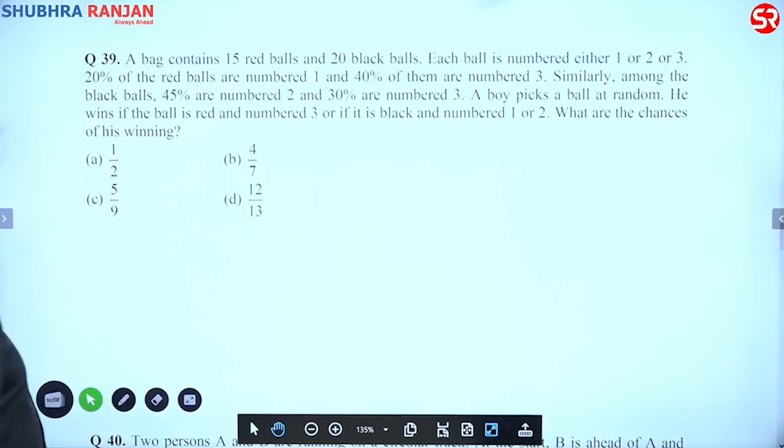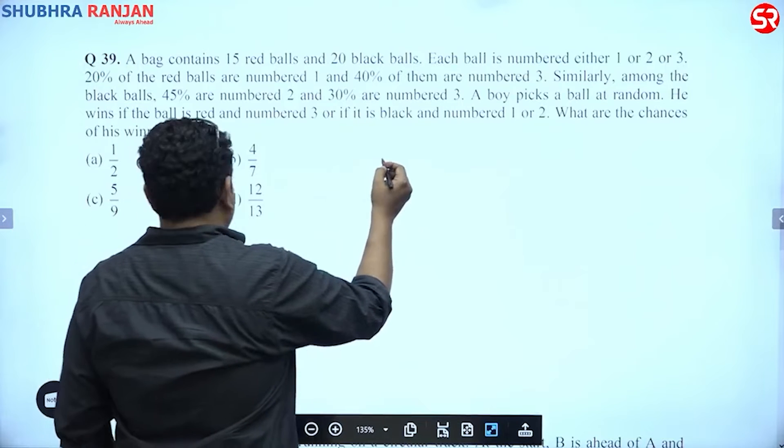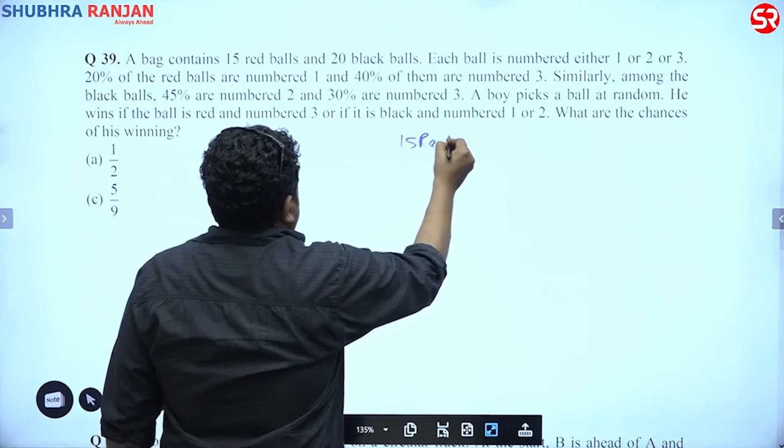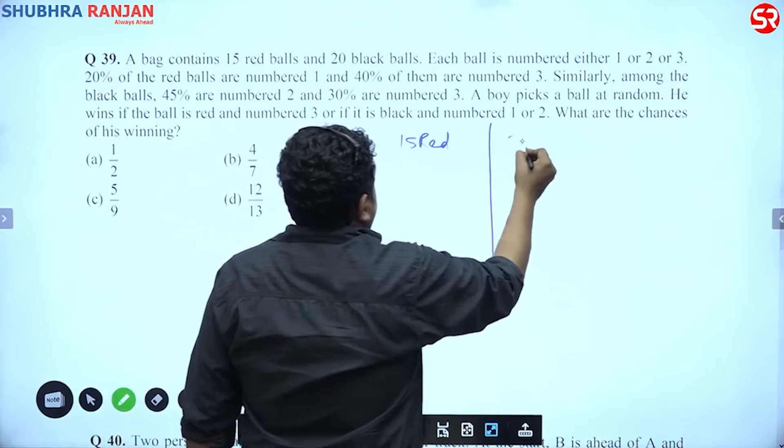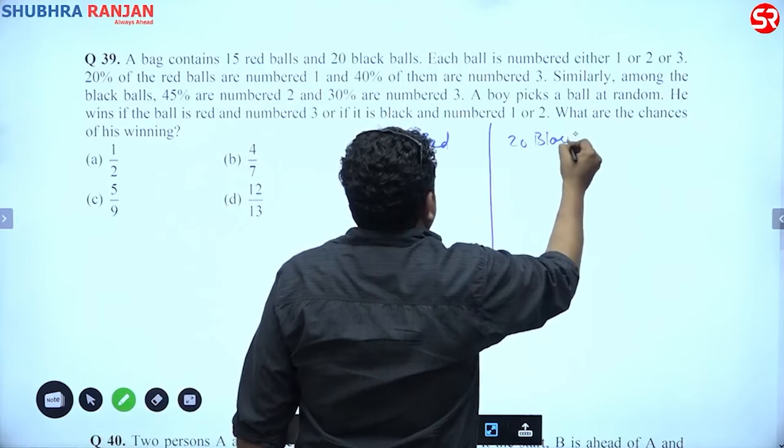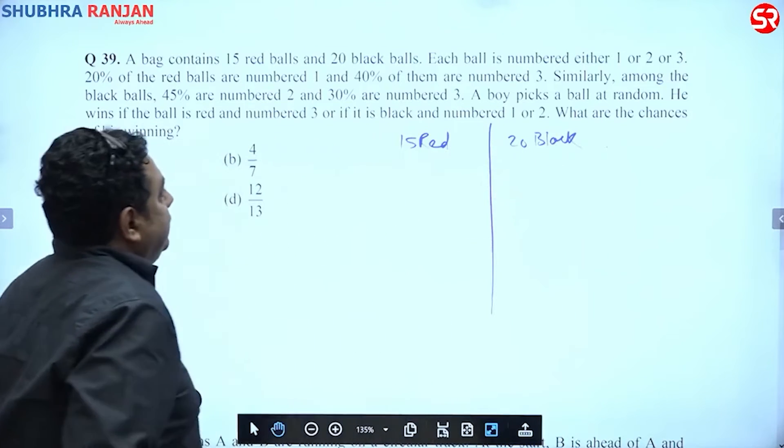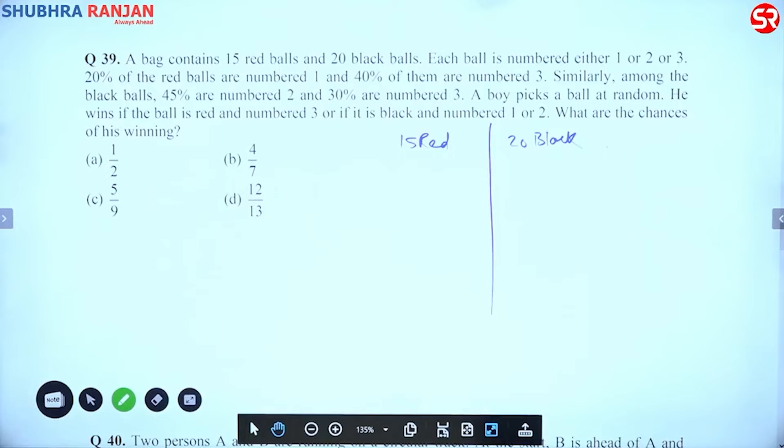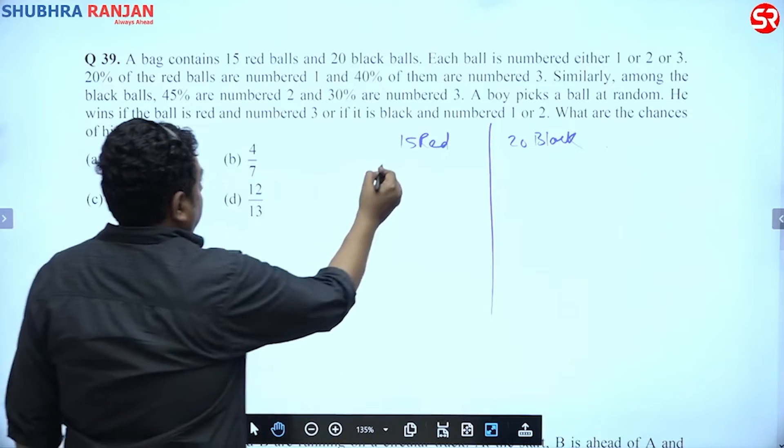are 15 red balls and 20 black balls. So 15 red and 20 black. He says each of the ball is numbered 1 or 2 or 3. 20% of the red balls are numbered 1.